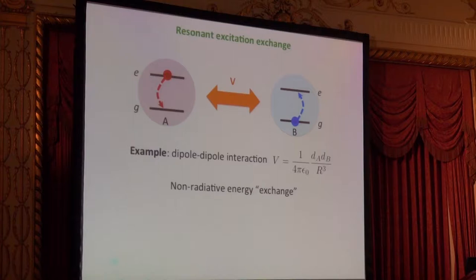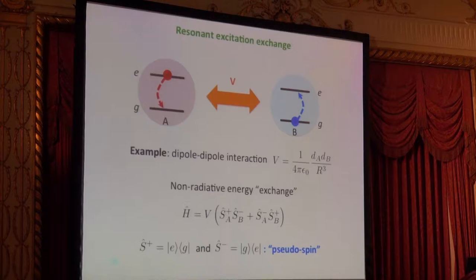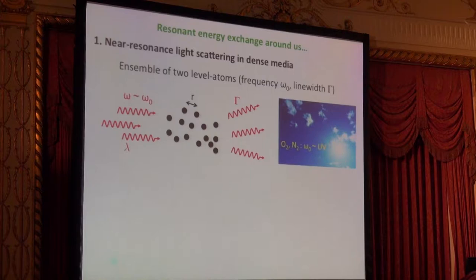From the mathematical point of view, I can describe all that by a Hamiltonian with a coupling strength given by the dipole-dipole interaction and an S-plus S-minus operator, S-plus being a raising operator and S-minus a lowering operator, mapping the system onto a pseudo-spin system. I would like to show a few examples where this resonant dipole-dipole interaction is actually more common than one may think at first glance.